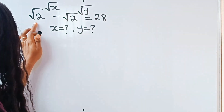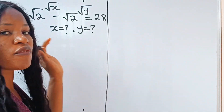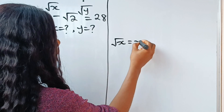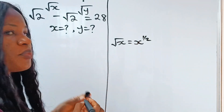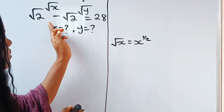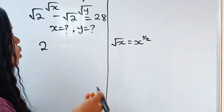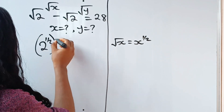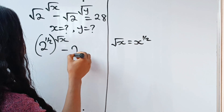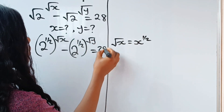First, let's recall the law of exponents or the law of indices that states that the square root of x is equal to x raised to the power of half. So let's analyze this in this form. That means we will write this as 2 raised to the power of half, raised to the power of root x, minus 2 raised to the power of half raised to the power of root y, is equal to 28.